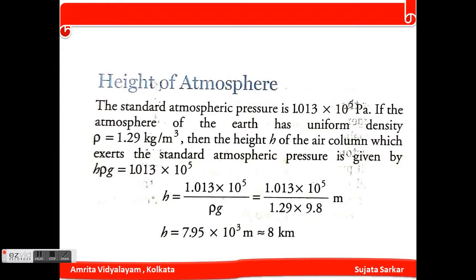We know that if the atmosphere of the earth has uniform density, denoted by rho, which is equivalent to 1.29 kg per meter cube, the height of the air column which exerts the standard atmospheric pressure is given by h·ρ·g = 1.013 × 10⁵. So we can find the value of h, which equals 1.013 × 10⁵ divided by 1.29 into 9.8 meters.